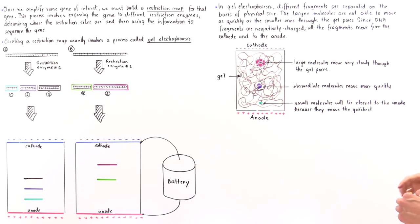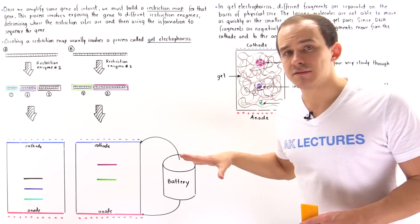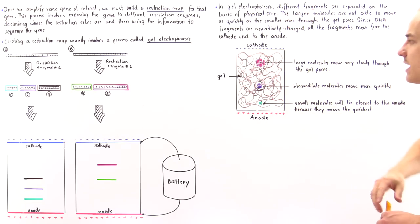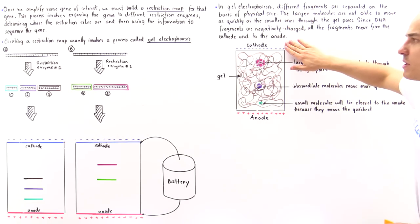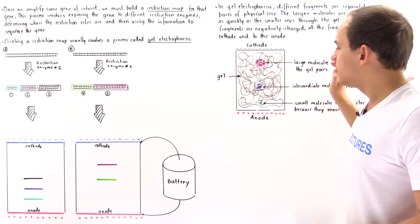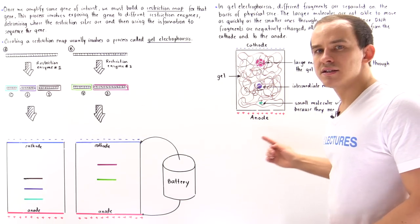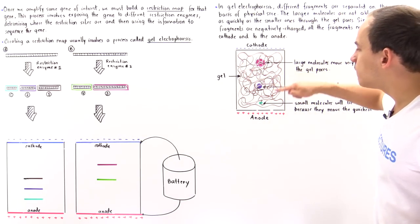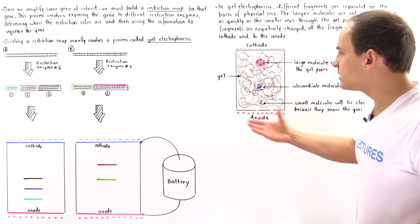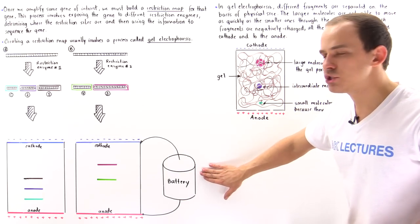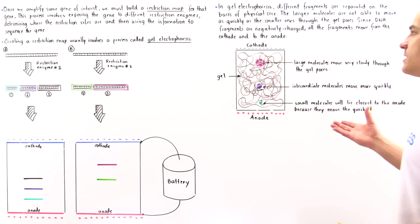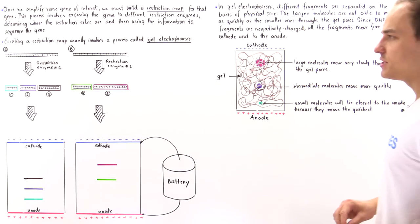Since DNA fragments are all negatively charged, they all move along the same direction — always from the cathode, the negatively charged side, to the anode, the positively charged side. This voltage difference is created because the entire structure is connected to a battery source. So this is what gel electrophoresis is.